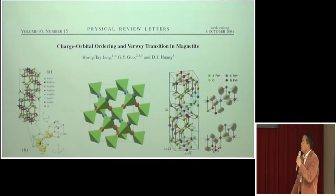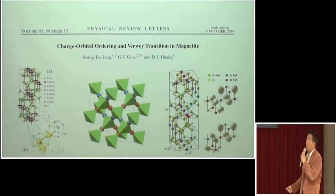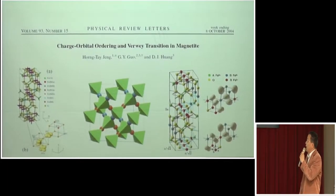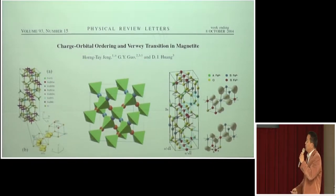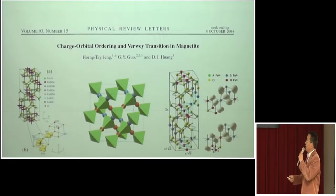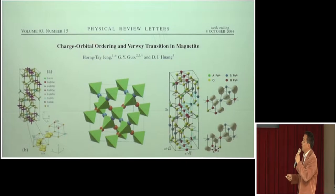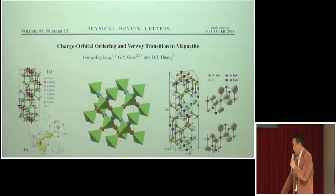Due to the highly anisotropic orbitals, transition metal oxide materials have different properties compared with conventional semiconductors. My research interest in transition metal oxides stems from a paper about 12 years ago when I was a postdoc at National Taiwan University with Professor Guo. In that paper, Professor Zheng, Professor Guo, and Professor Huang used a first-principles method to show for the first time the long-standing metal-to-insulator transition in magnetites as a result of charge-orbital ordering, which was later verified by experiment.